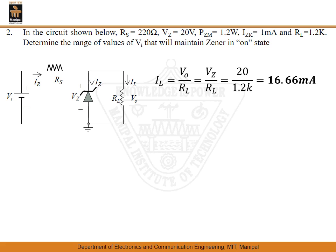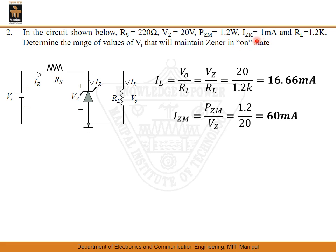To find all parameters, we first determine IL, which equals V0 divided by RL, or VZ divided by RL. So 20 volts divided by 1.2 kilo ohm gives a load current of 16.66 milli amperes — the variation in input voltage does not affect this value. The minimum Zener current IZK is given as 1 milli ampere. The maximum Zener current IZM is found by dividing the maximum power dissipation PZM by VZ, giving 60 milli amperes.